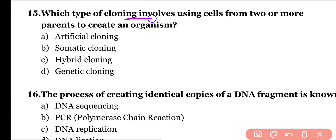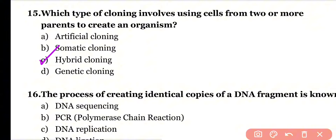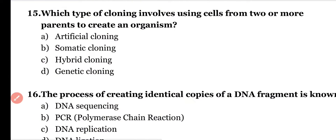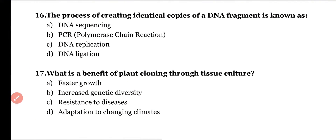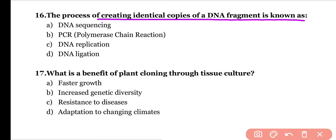Question number fifteen: Which type of cloning involves using cells from two or more parents to create an organism? Options: artificial cloning, somatic cloning, hybrid cloning, genetic cloning. Correct answer is option C — hybrid cloning involves using cells from two or more parents.